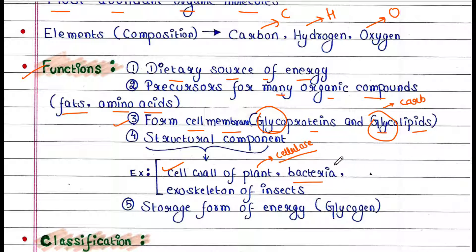Bacterial cell wall contains peptidoglycan, and peptidoglycan is made up of carbohydrate and protein. Exoskeletons of insects are also made up of carbohydrate, that is chitin.